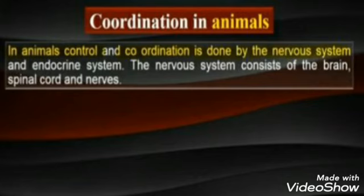Hello students. Today we will study about the coordination in animals. The coordination in animals occurs with the help of the nervous system and the endocrine system.